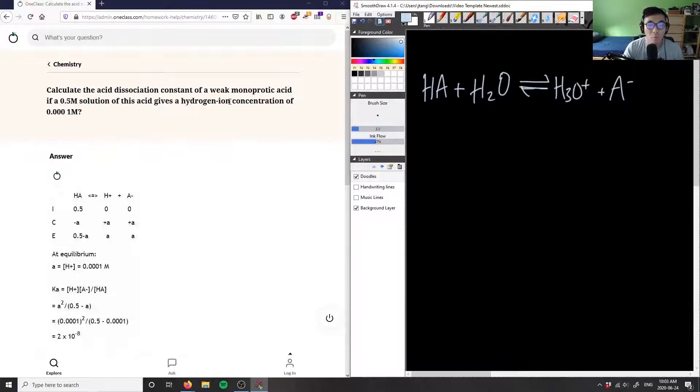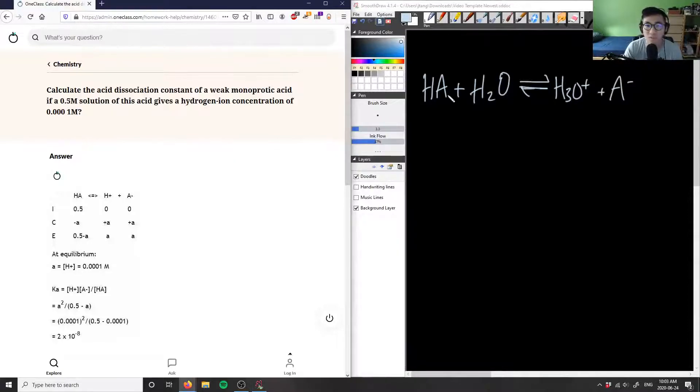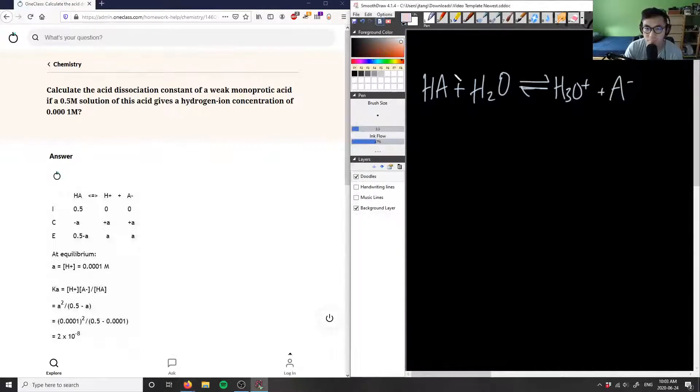So what we want to do is we have some type of initial concentration and we want to calculate the acid dissociation constant. So what is that? Well, that's simply our Ka expression, the Ka of this formula here. We want to find out our Ka.